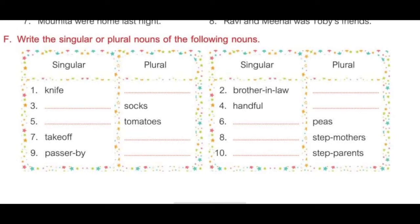Write the singular or plural nouns of the following: if the noun given is singular, write the plural; if plural is given, write the singular. Question 1 — singular given: knife, so the plural will be knives. Question 2: brother-in-law is singular, so the plural will be brothers-in-law. Question 3 — plural given, so the singular will be sock. Question 4 — singular: handful, so the plural will be handfuls. Question 5 — plural given, so the singular will be tomato, and the plural is tomatoes.